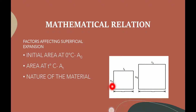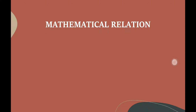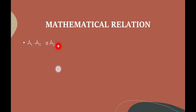The initial value of length and breadth of the sheet will be lesser than the final values. So we can say that the superficial expansion is directly proportional to A0, which is the original area. This means that the greater the original area, the more will be the expansion.